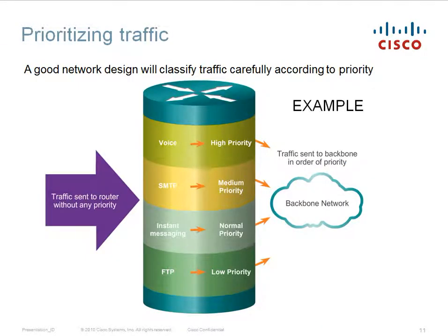In a network, you can prioritize traffic depending on your needs. A good network design will classify traffic carefully according to priority. For instance, in the diagram we can see that voice traffic is the highest priority, probably because it's in an office environment and they depend on it for good communication.